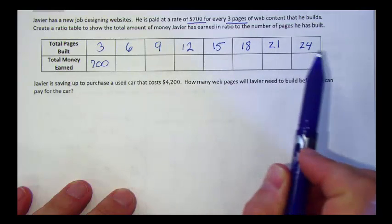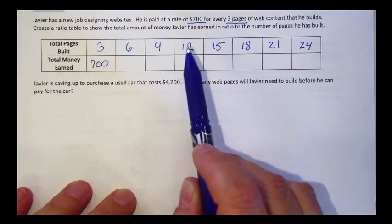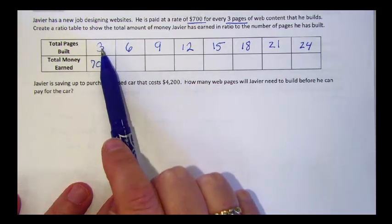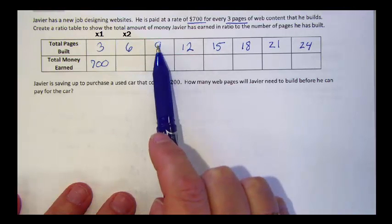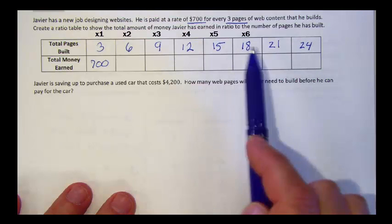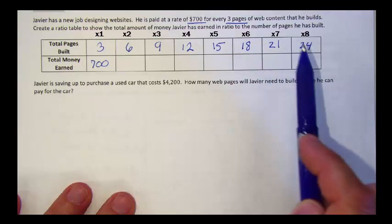In this table, to make whole number equivalent ratios, we've added 3 each time. Or we've multiplied 3 by the location: 3 times 1, 3 times 2, 3 times 3, 3 times 4, 3 times 5, 3 times 6, 3 times 7, 3 times 8.